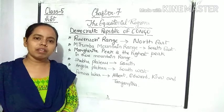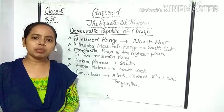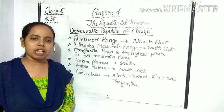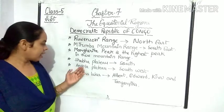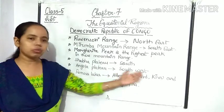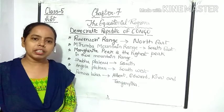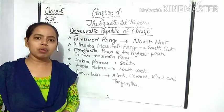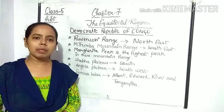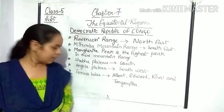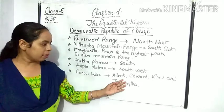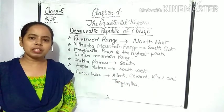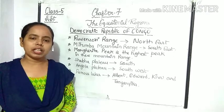Besides the mountain ranges, there are also some plateaus here. The famous ones are: number one, the Samba Plateau situated in the south; and number two, the Angola Plateau situated in the south-west. The Democratic Republic of Congo is also considered the country of lakes. The famous lakes are Albert, Edward, Kivu, and Tanganyika.